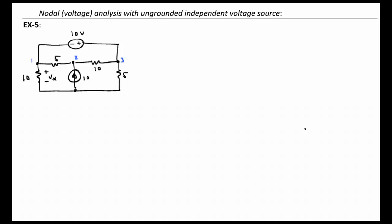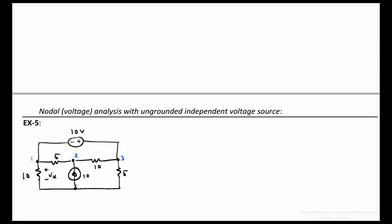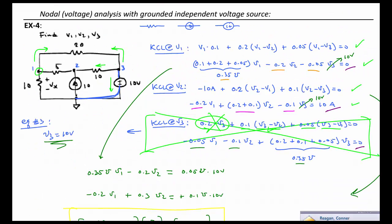We now have a modified circuit from the previous one we worked where the voltage source has been moved from being grounded here in place of the 5-ohm resistor, and it has now been placed across the top bridging node 1 and 3, replacing the 20-ohm resistor.